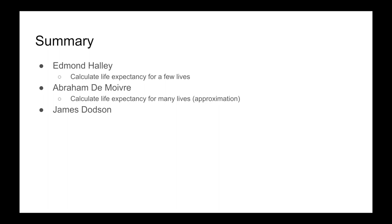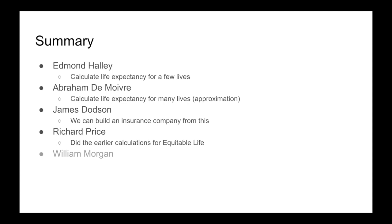Richard Price does a lot of the earlier calculations for Equitable Life, and William Morgan improves the accuracy. What's quite nice is how they're all connected: Halley and de Moivre were friends; Dodson was a student of de Moivre; Price worked for the company that Dodson envisioned; and Price himself tutored William Morgan.